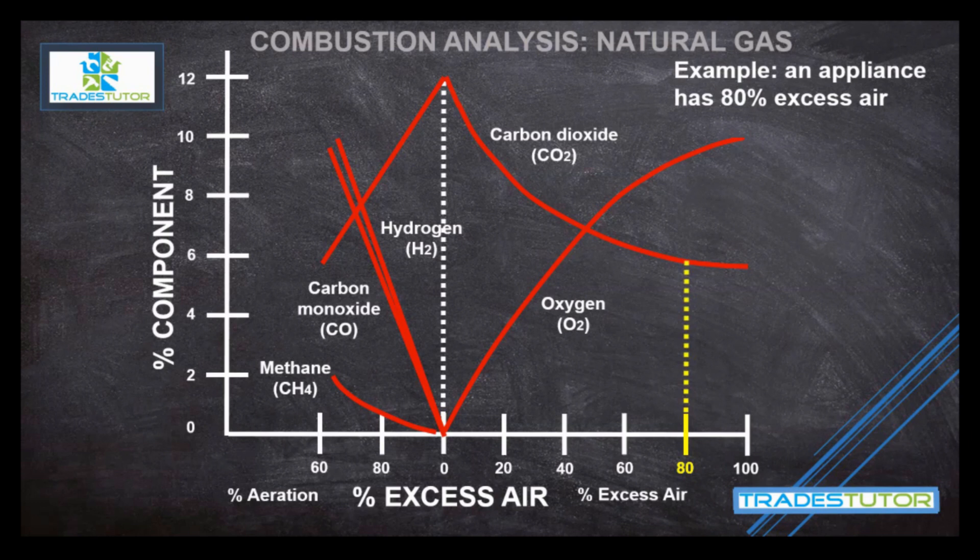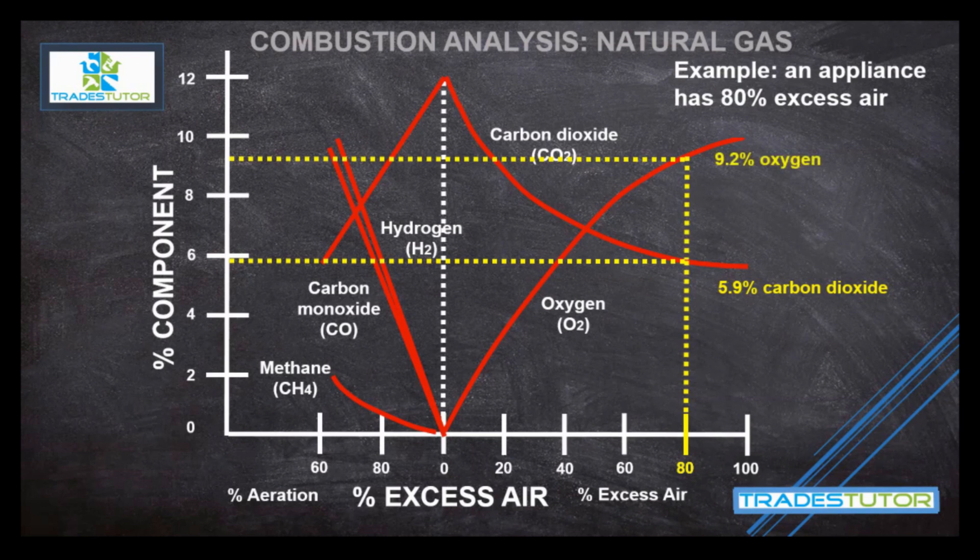Now, what you do at that point is you go left. There you go. That's the percent of carbon dioxide. So we would get 5.9% of carbon dioxide. That's what we would expect, given 80% excess air. Now, if you want to find out the oxygen level, go up a little bit more. Continue on straight up until you hit the oxygen line. Once again, go left. And we get about 9.2%. That's the readings we'd expect to find.